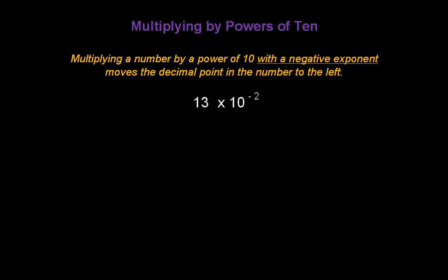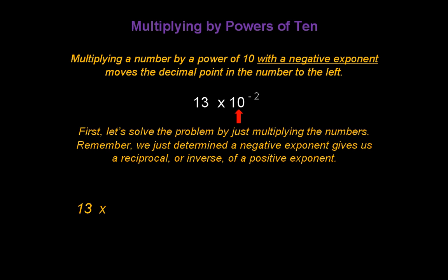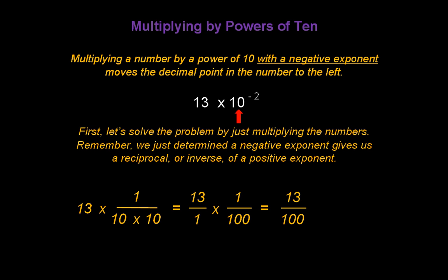Here's a problem: 13 times 10 to the negative second power. We're going to solve the problem by multiplying the numbers. We know a negative exponent gives us a reciprocal or inverse of a positive exponent, so we write 10 times 10 in the denominator of a fraction with 1 in the numerator. Writing both numbers as fractions: 13 becomes 13 over 1, and 1 over 10 times 10 is 1 over 100. Multiplying numerators and denominators gives us 13 over 100. Dividing 13 by 100 gives a decimal answer of 0.13.